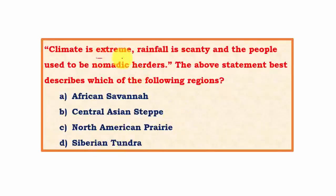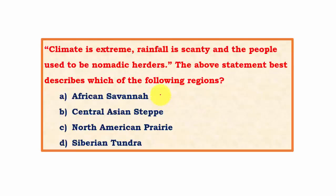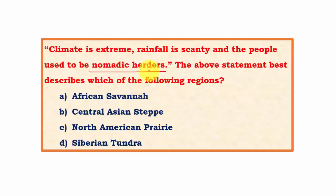The next question: 'Climate is extreme, rainfall is scanty, and the people used to be nomadic herders' - which region does this best describe? African Savanna has extreme summers but the rainfall is between 100 to 150 cm, which is a good amount and cannot be considered scanty. Also, African Savanna has both settled agricultural farmers and nomadic herders, so the description doesn't perfectly fit.